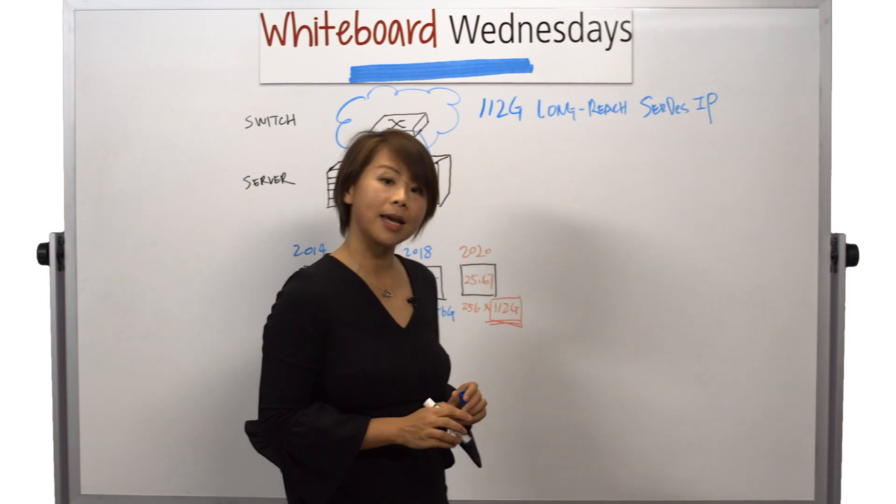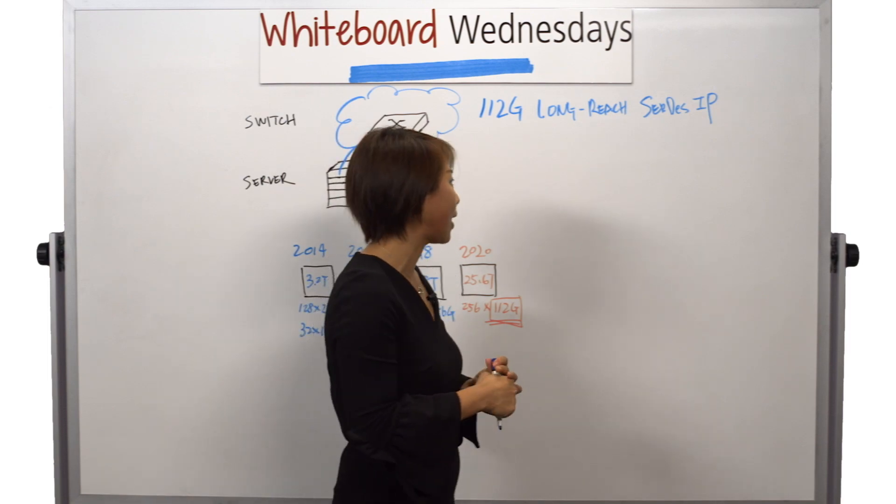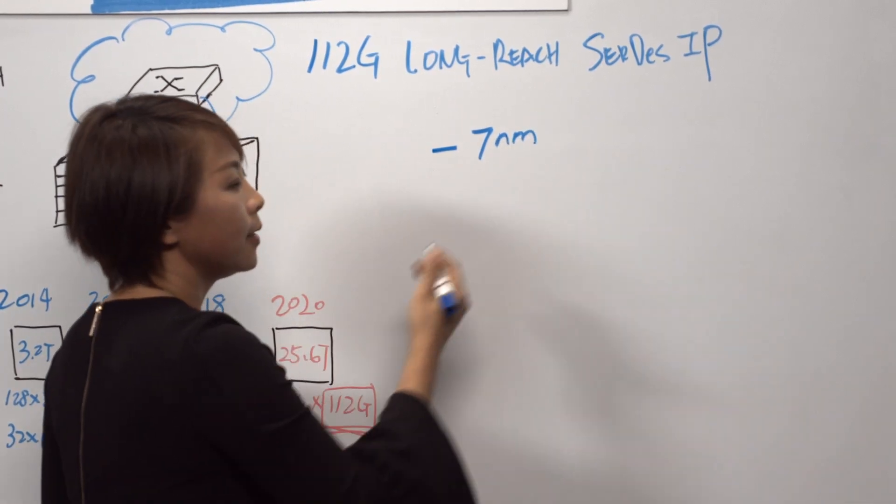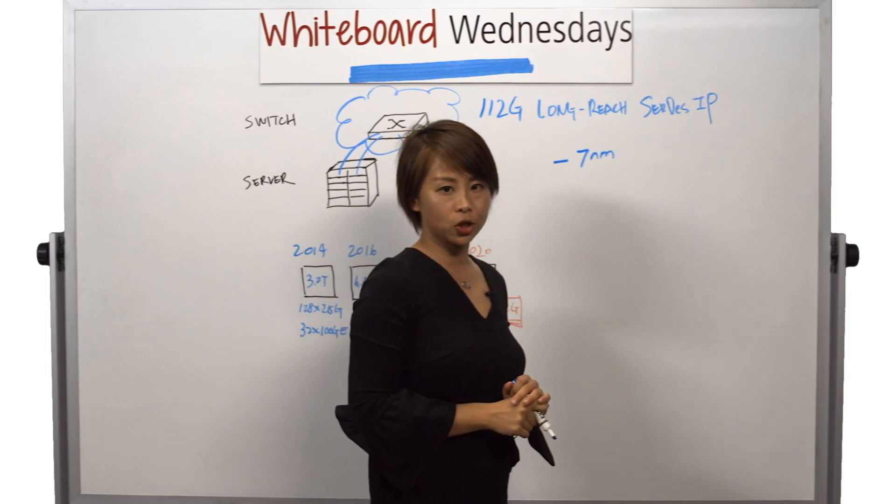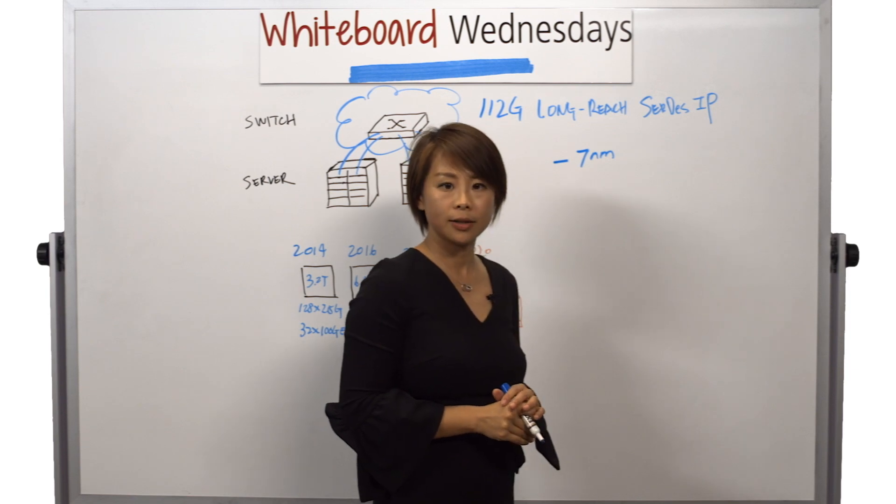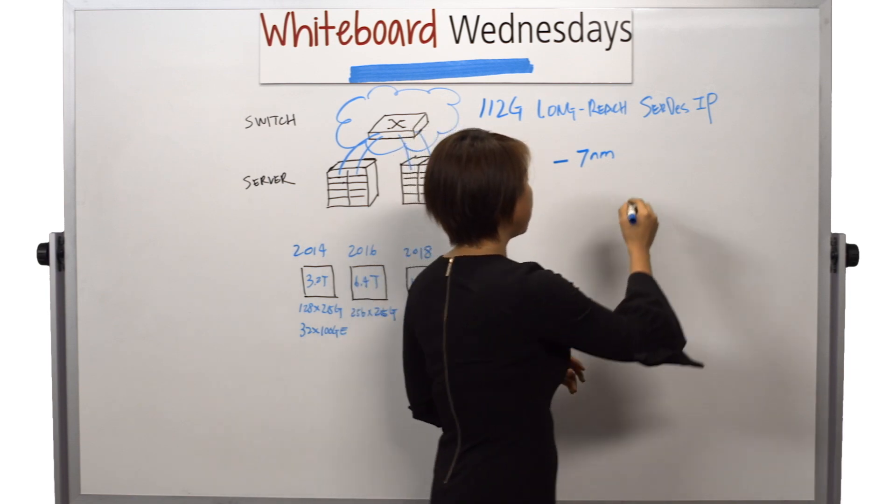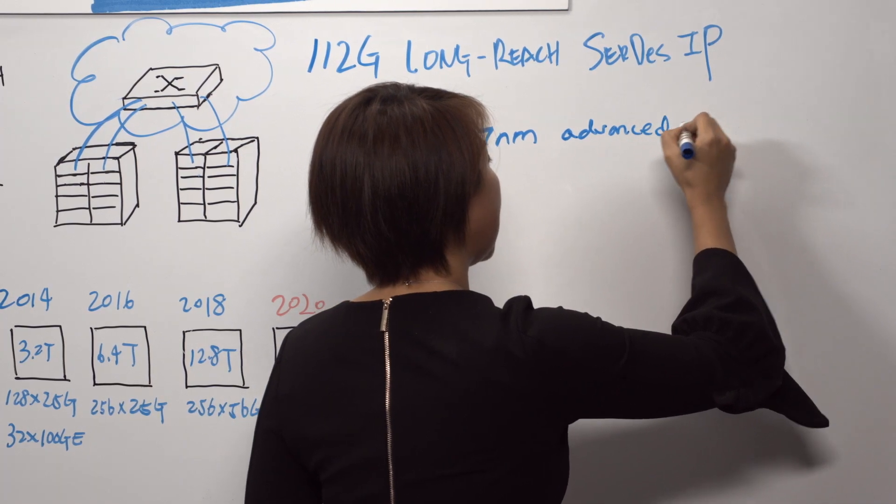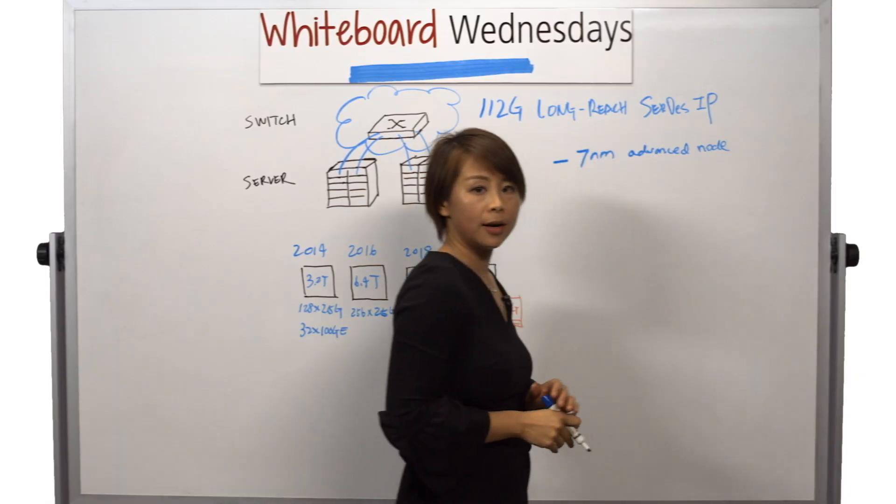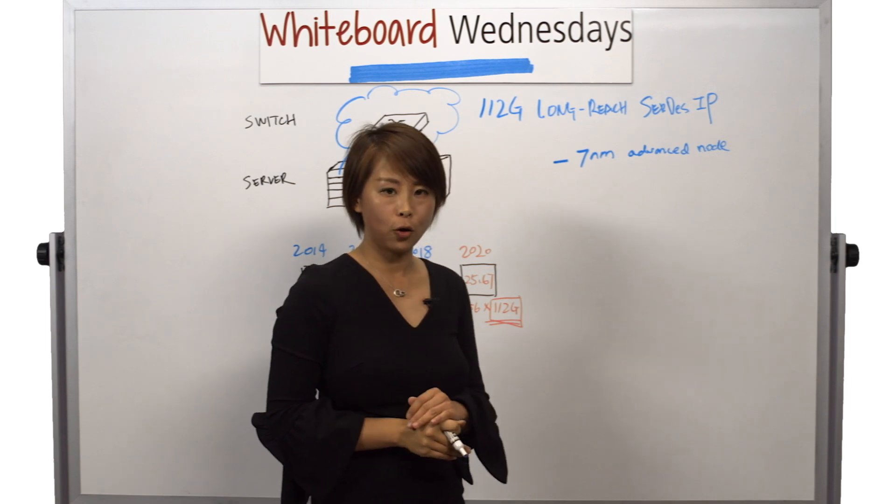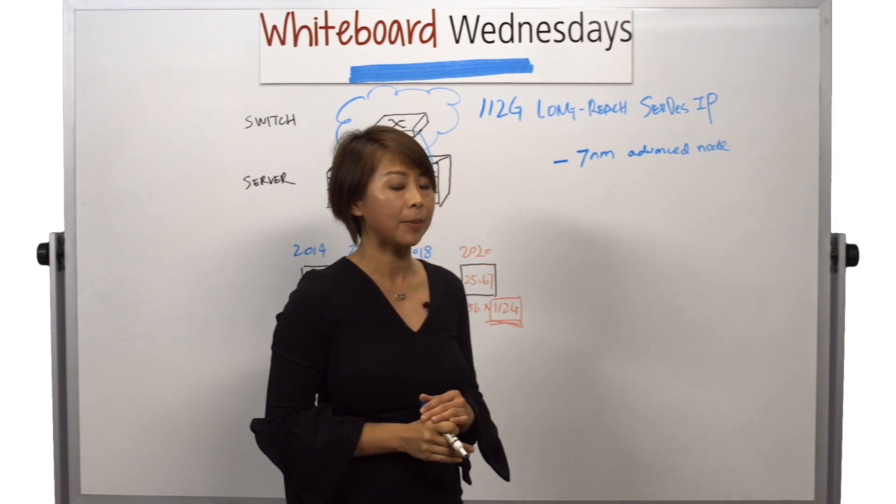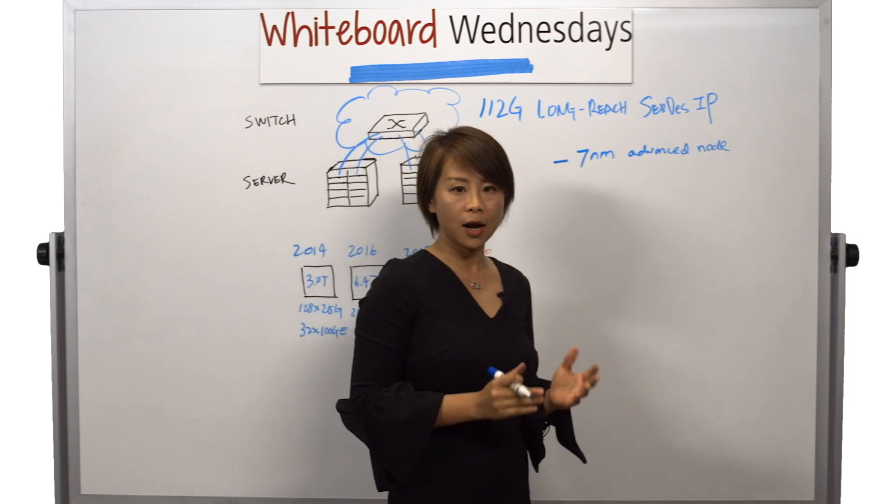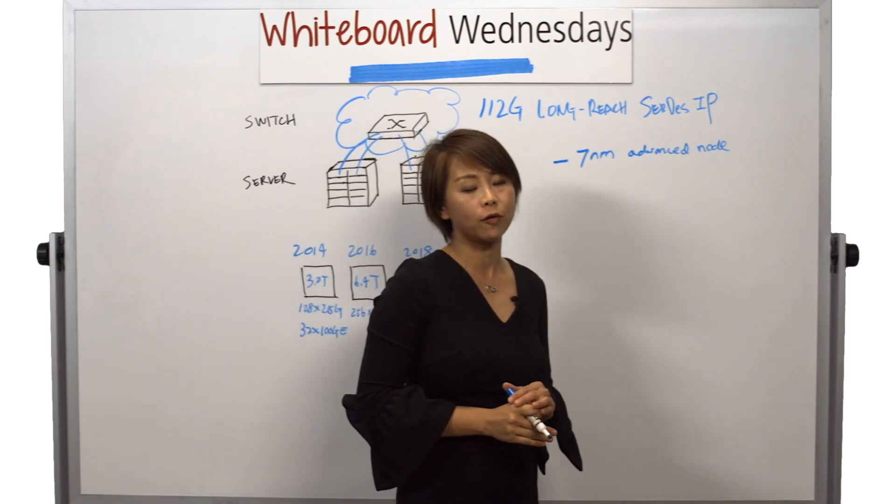Next, let's take a closer look at our product. So first, this IP is manufactured in 7 nanometer technology. The 7 nanometer advanced node is very important and is optimal for high performance computing applications. 7 nanometer provides significant area and power benefit over 16 nanometer.